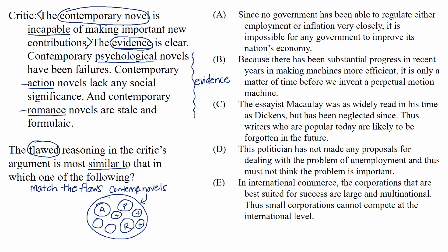Choice A: Since no government has been able to regulate either employment or inflation very closely, it's impossible for any government to improve its nation's economy. This argument has the same kind of strong conclusion we see in the passage, and it's based on just two specific examples — employment and inflation — assuming there's no other way to improve a nation's economy, just like the passage assumed there's no other kind of contemporary novel than what was listed. So this is a match.